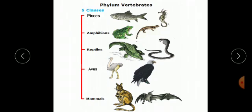Phylum vertebrate can be further classified into five classes: Pisces, Amphibians, Reptiles, Aves, and Mammals. We have already discussed Pisces, Amphibians, and Reptiles.